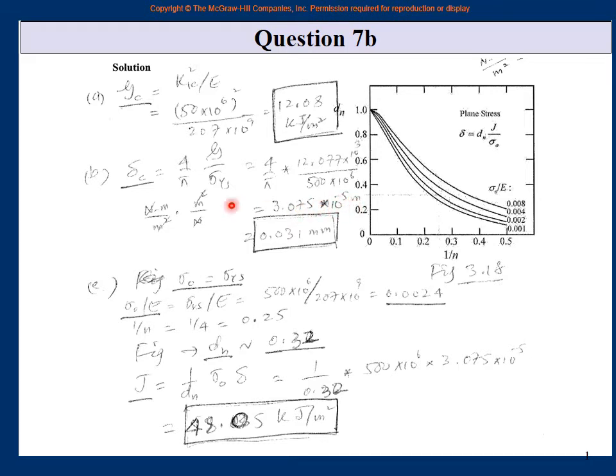Now generally this is the CTOD, this is the crack tip opening. Don't leave this in 10 raise to minus 5 meter. Change it to millimeter: 0.031 millimeter. Now it means something. Though the value here is right, there is nothing wrong, but engineers when they talk to each other do not say it is 3 into 10 raise to minus 5 meter. They say it is 0.03 millimeter or 31 micrometer.